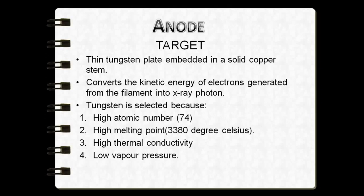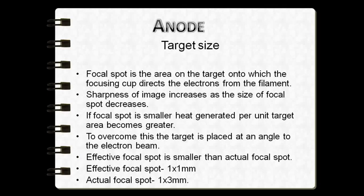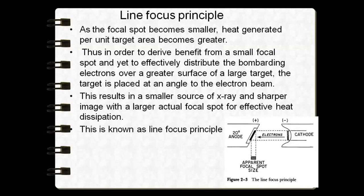The target converts the kinetic energy of electrons generated from the filament into x-ray photons. The electrons hit a specific area within the target called the focal spot. As the size of the focal spot decreases, image sharpness increases. To achieve a smaller focal spot, we follow the line focus principle — also called the Benson line focus principle — which states that we need a smaller focal spot size while generating heat over a wide area of the target.